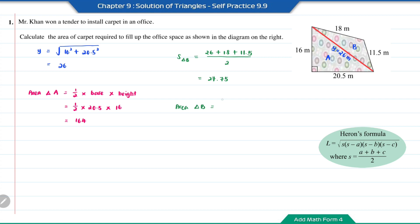Now we can find the area of triangle B. It equals the square root of 27.75 times (27.75 minus 26) times (27.75 minus 18) times (27.75 minus 11.5), which gives 87.716 square meters.